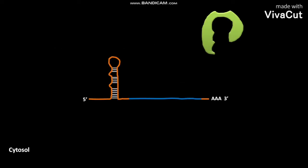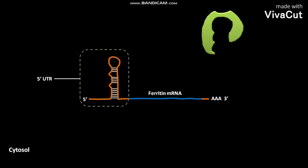This is the ferritin mRNA. This is the 5' UTR, or untranslated region, of ferritin mRNA.